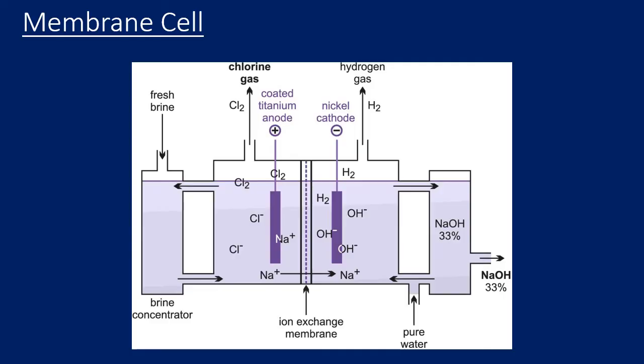A membrane cell then, so what's the difference? The membrane cell here only allows the movement of positive ions, so the sodium ions can move across but nothing else. The water, the chloride won't move across.